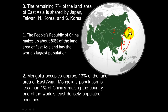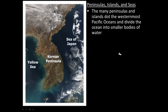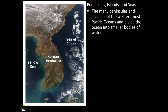Moving to the next concept, we'll discuss the different peninsulas, islands, and seas that make up East Asia. The main one we'll focus on is the Korean Peninsula, made up of North and South Korea. The many peninsulas and islands along the western Pacific Ocean divide it into smaller bodies of water. For example, the Yellow Sea is on one side of the Korean Peninsula, and the Sea of Japan is on the other side.